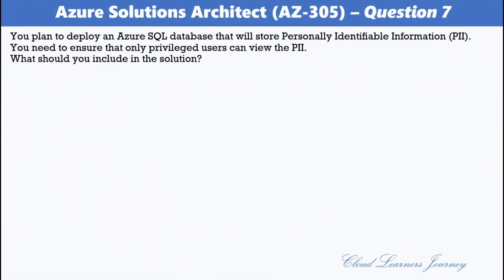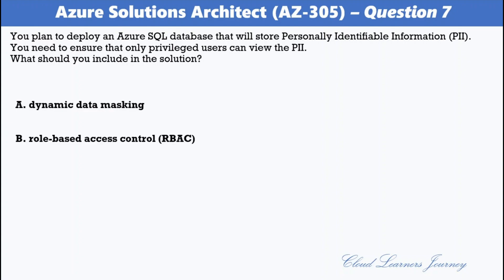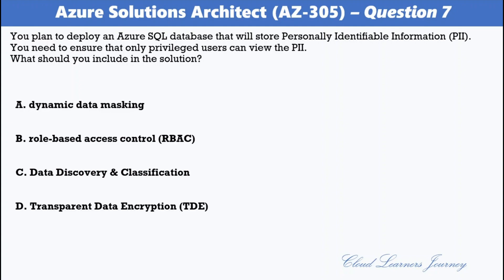Question number 7. You plan to deploy an Azure SQL database that will store personally identifiable information. You need to ensure that only privileged users can view the PII. Options are: A. Dynamic data masking; B. Role-based access control; C. Data discovery and classification; D. Transparent data encryption. The correct option is A. Dynamic data masking. Dynamic data masking limits sensitive data exposure by masking it to non-privileged users.